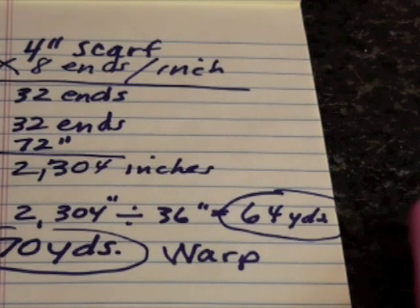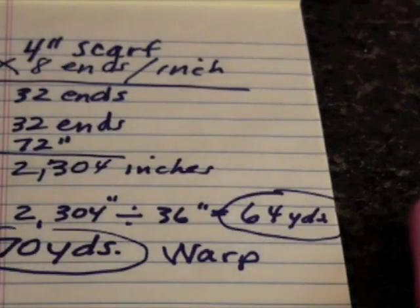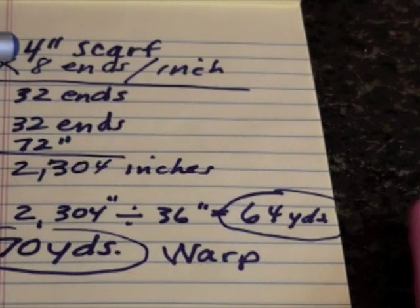So that's it. It's as simple as that. This is for an 8-dent reed. If I was using a 10-dent reed, I would follow the same process. Except I would change the number of ends per inch to be 10. So all of these numbers would be a little bit different. But it's as easy as that.